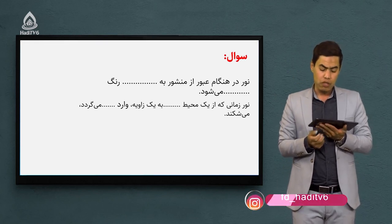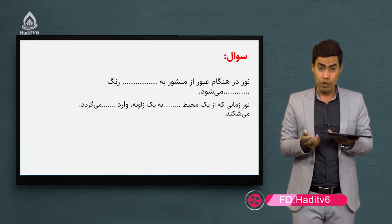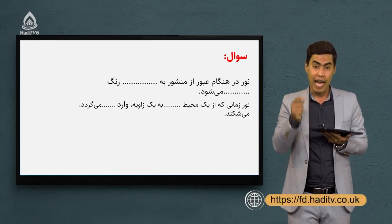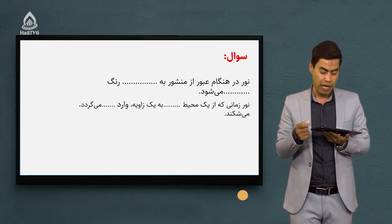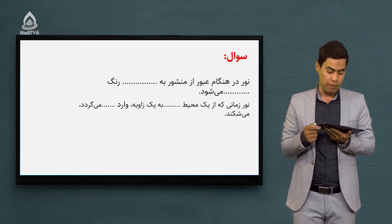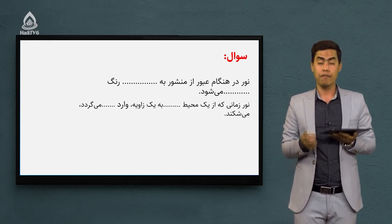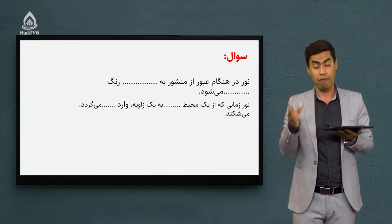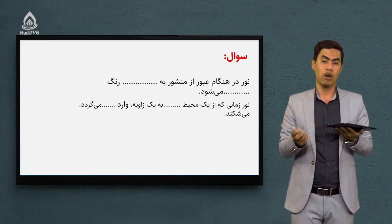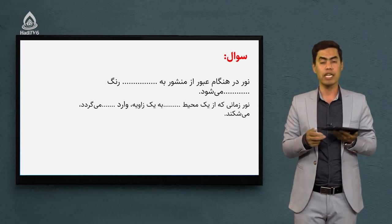سوال بعدی: گفته که نور در هنگام عبور از منشور به هفت رنگ تجزیه می‌شود. منشور از جمله اجسامی بود که باعث انکسار نور می‌شود. گفتیم وقتی نور سفید وارد منشور می‌شود به هفت رنگ تجزیه می‌شود. قسمت دوم سوال: نور زمانی که از یک محیط شفاف وارد محیط شفاف دیگری می‌گردد می‌شکند یا انکسار پیدا می‌کند. وقتی که نور از یک محیط شفاف وارد محیط شفاف دیگری می‌شود، وقتی که به سطح جدایی دو محیط می‌رسد مسیر اشعه‌های نور عوض می‌شود و شکسته می‌شود که به این پدیده می‌گیم انکسار نور.